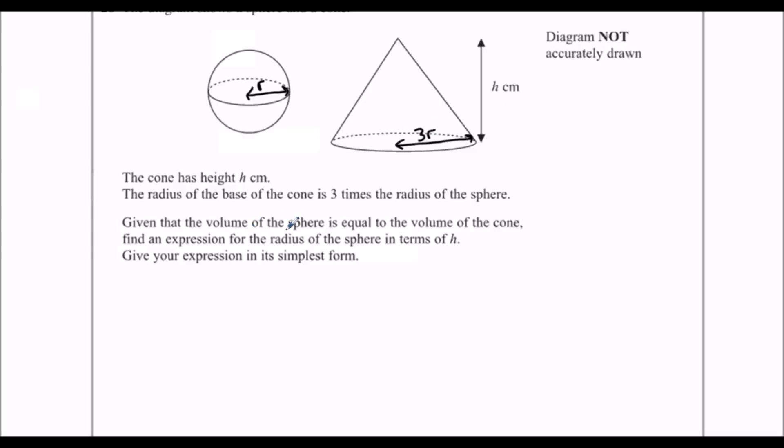Given the volume of the sphere is equal to the volume of the cone. We've got the formula page to help us. The volume of a sphere is 4 over 3 π r cubed, and the volume of the cone is 1 third π r squared h.